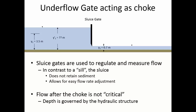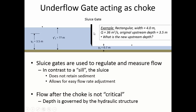With a sluice gate, there is not necessarily critical flow like there is with a broad-crested weir. To illustrate: if the downstream depth is 0.7 meters, and originally the flow was at a depth of 3.5 meters before the gate was installed, we want to find how much the water will pool upstream. We'll use a specific energy comparison between sections 1 and 2 to find the new upstream depth rather than the gate equation.